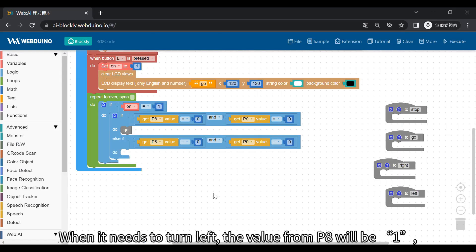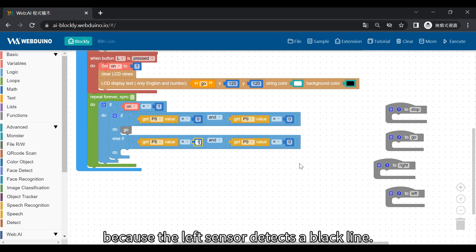When it needs to turn left, the value from P8 will be 1, because the left sensor detects a black line. Conversely, the value from P9 will be zero. Click functions to add the left block.